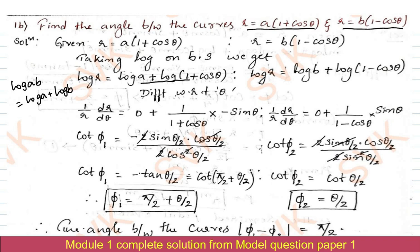Differentiating, the derivative of log r gives (1/r)·(dr/dθ). The derivative of log(1 + cosθ) is [1/(1 + cosθ)] × (−sinθ). Similarly, the derivative of log b is 0, and the derivative of log(1 − cosθ) is [1/(1 − cosθ)] × sinθ, since minus times minus gives plus sinθ.